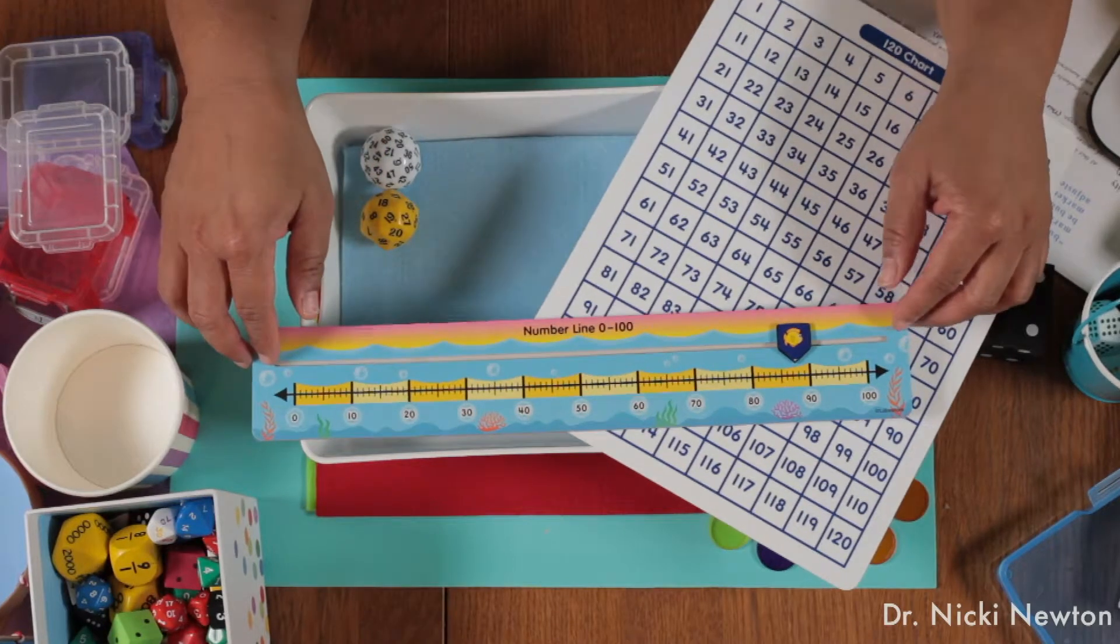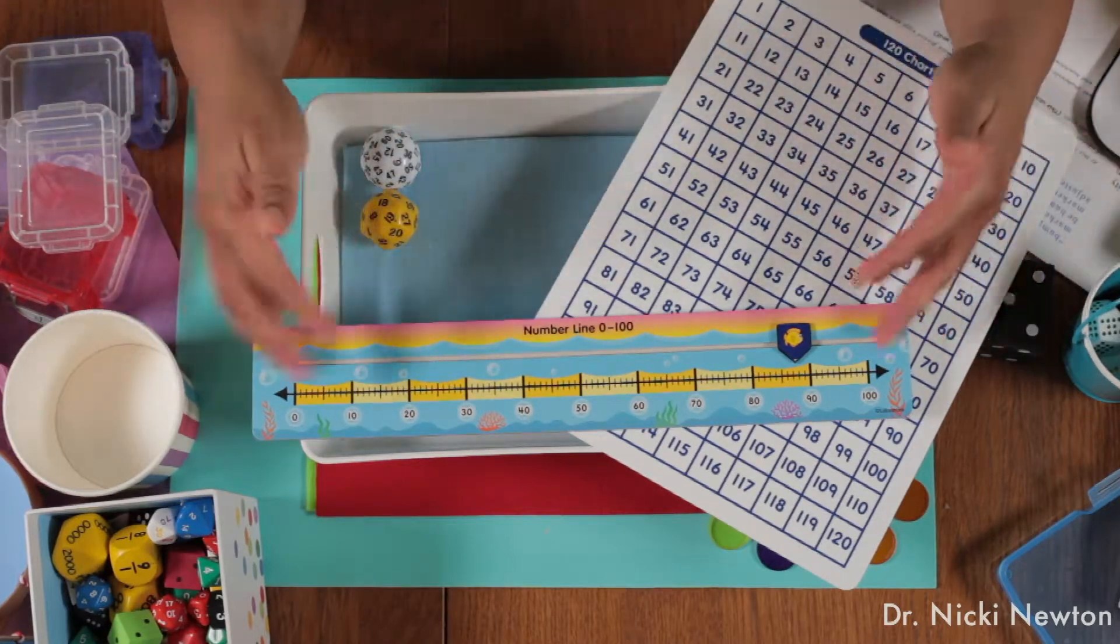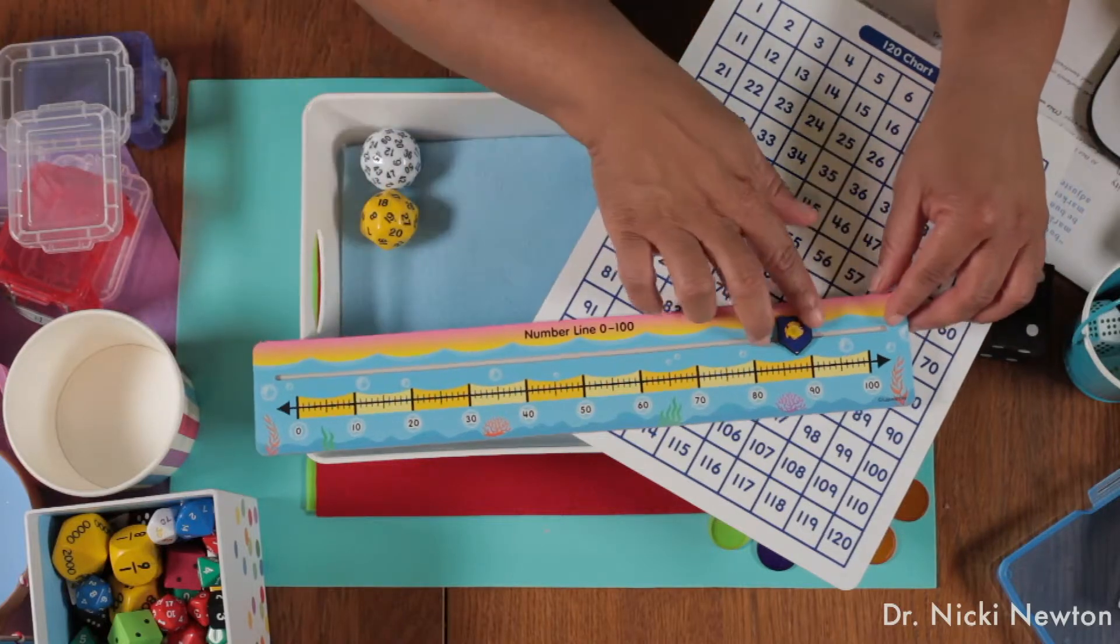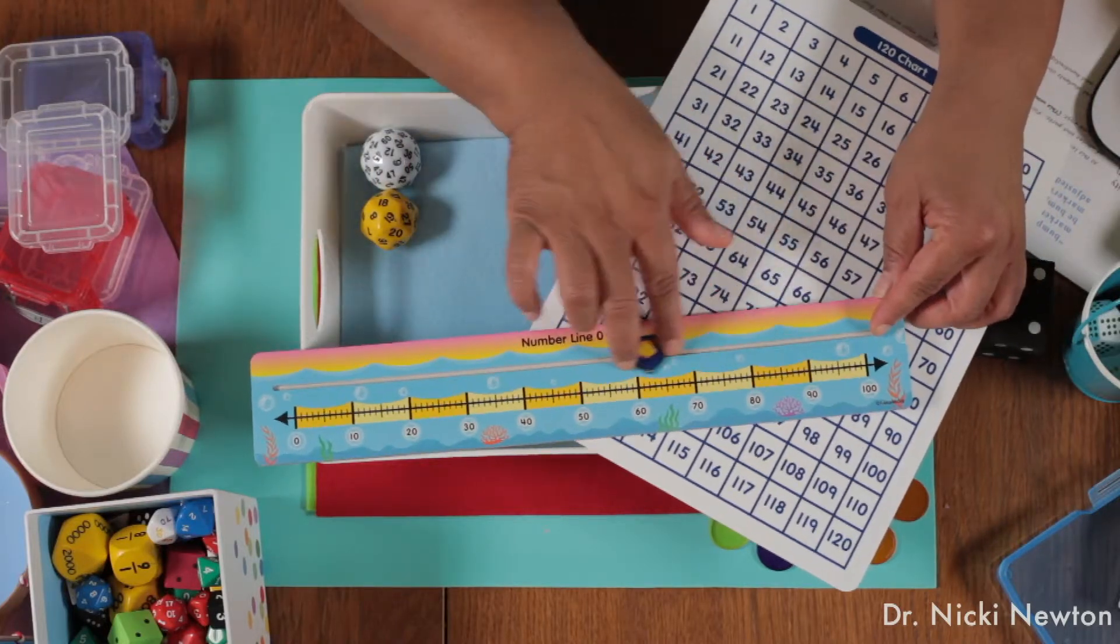And then these are just number lines. You can have printable number lines, you can buy number lines, but then the kids can do that on the number line.